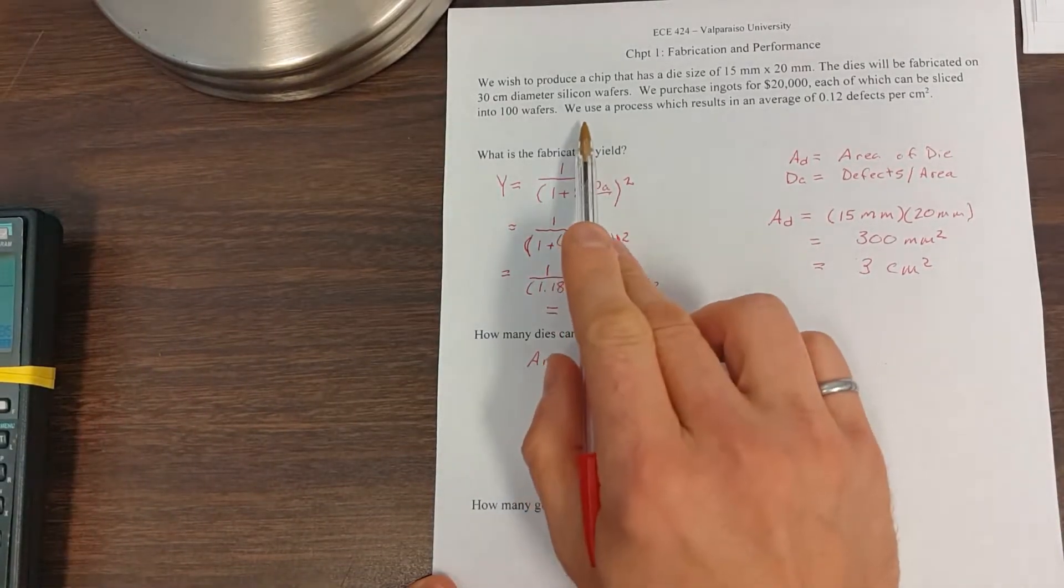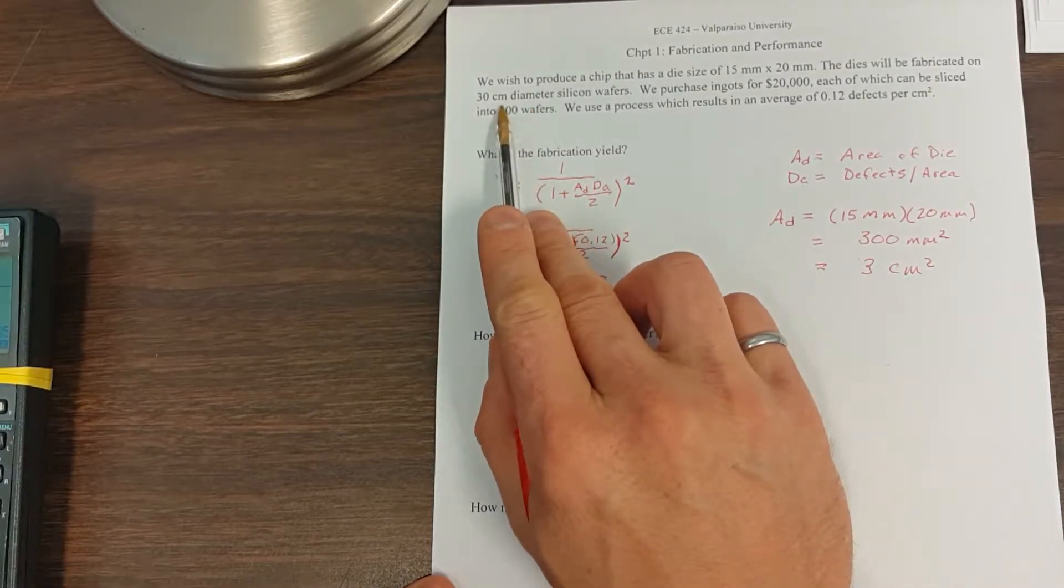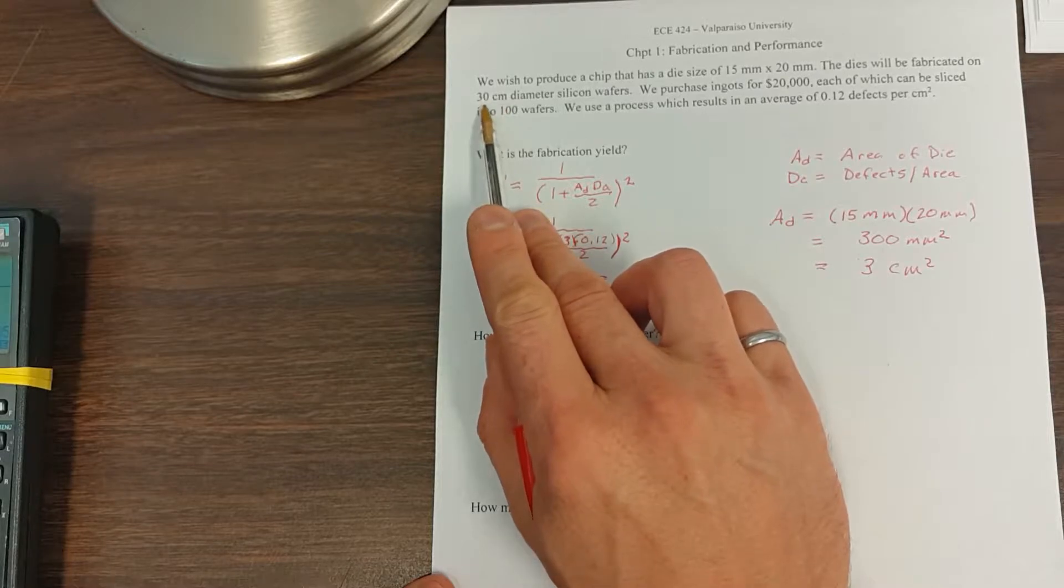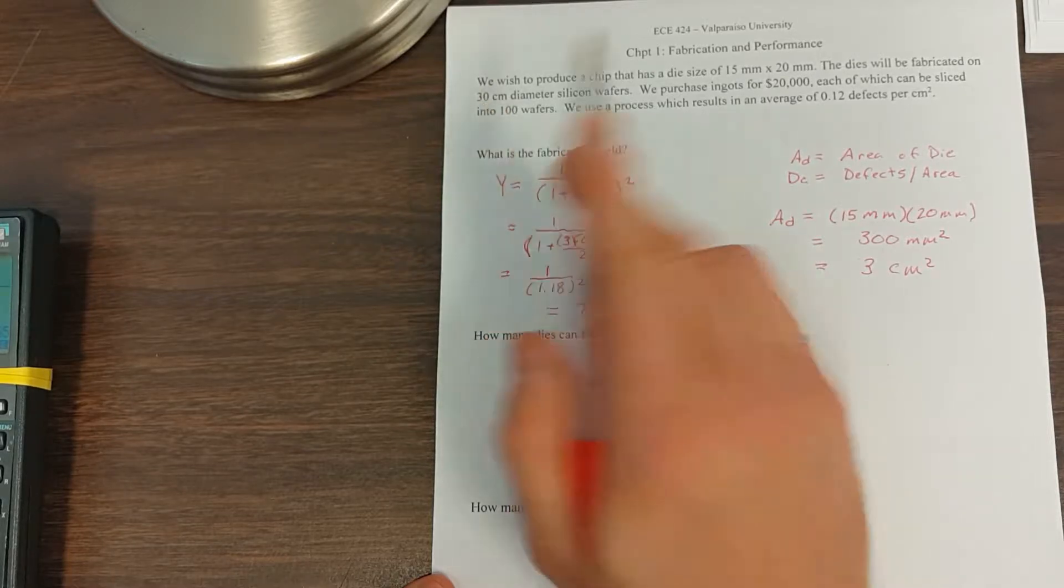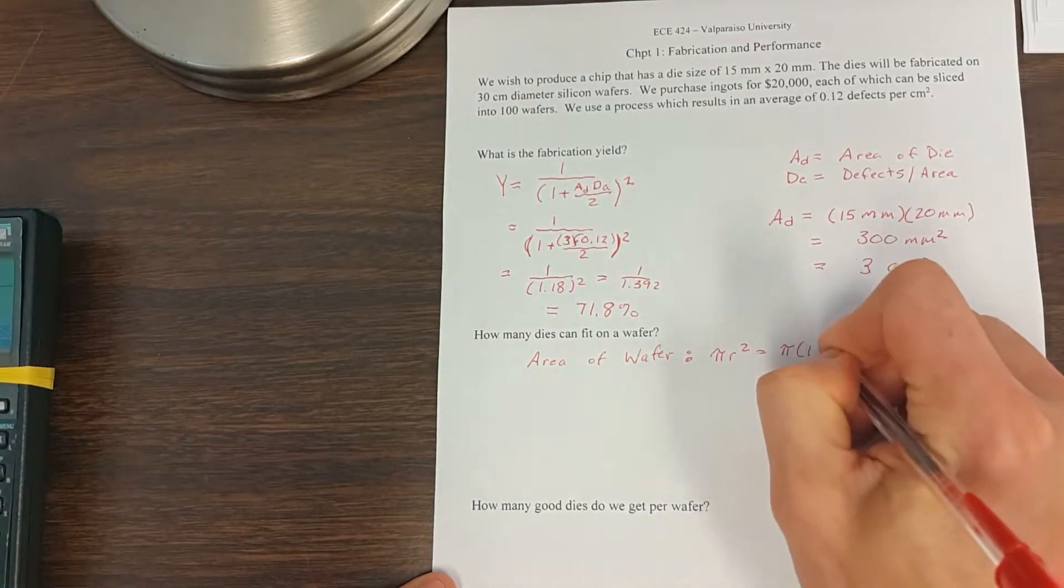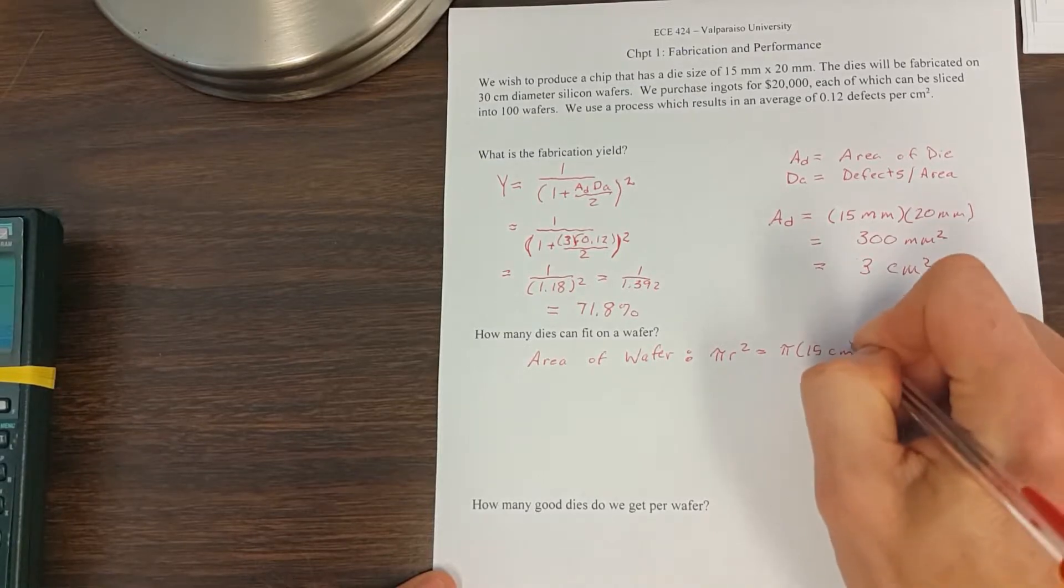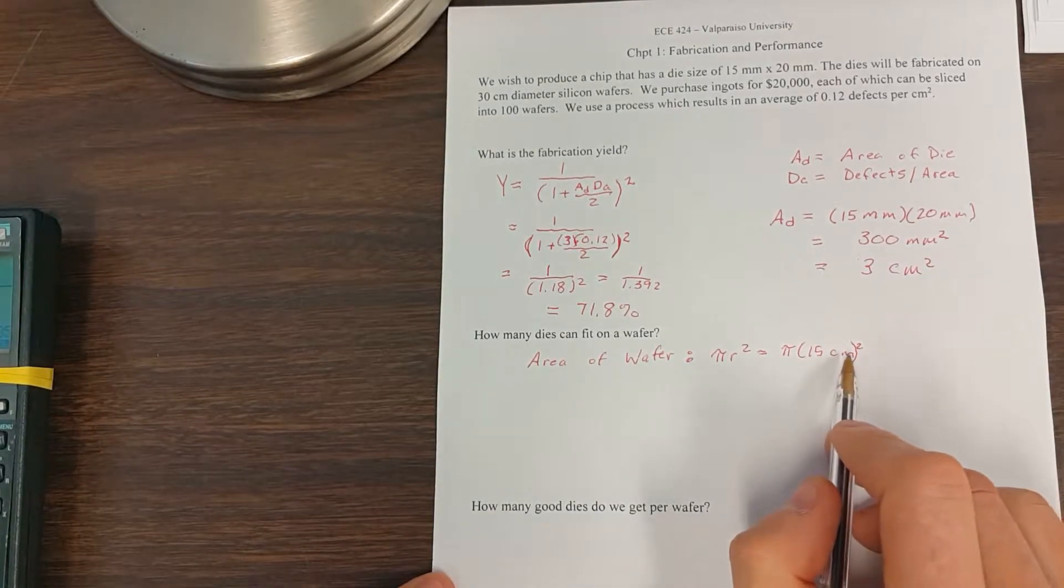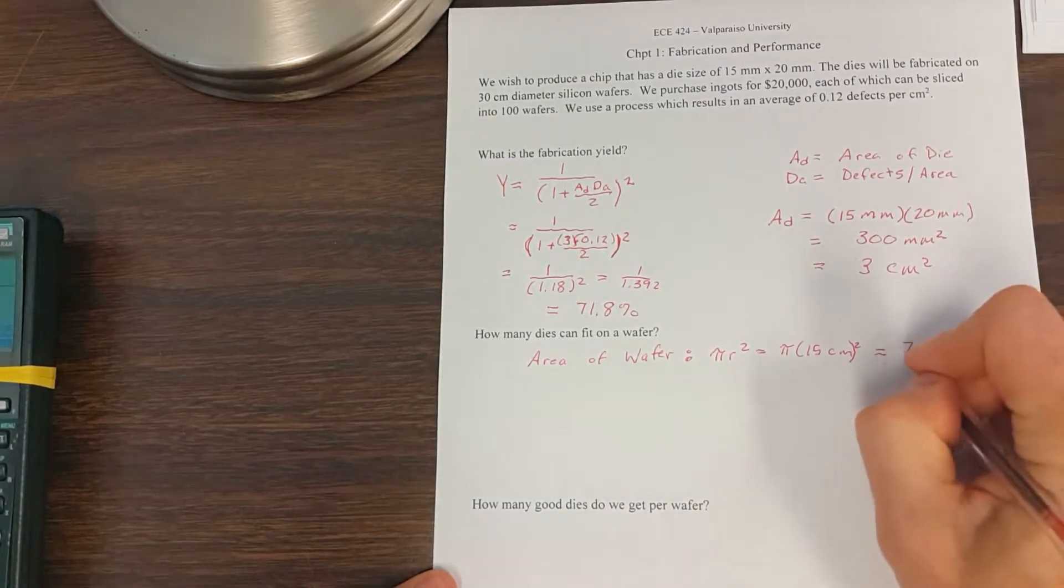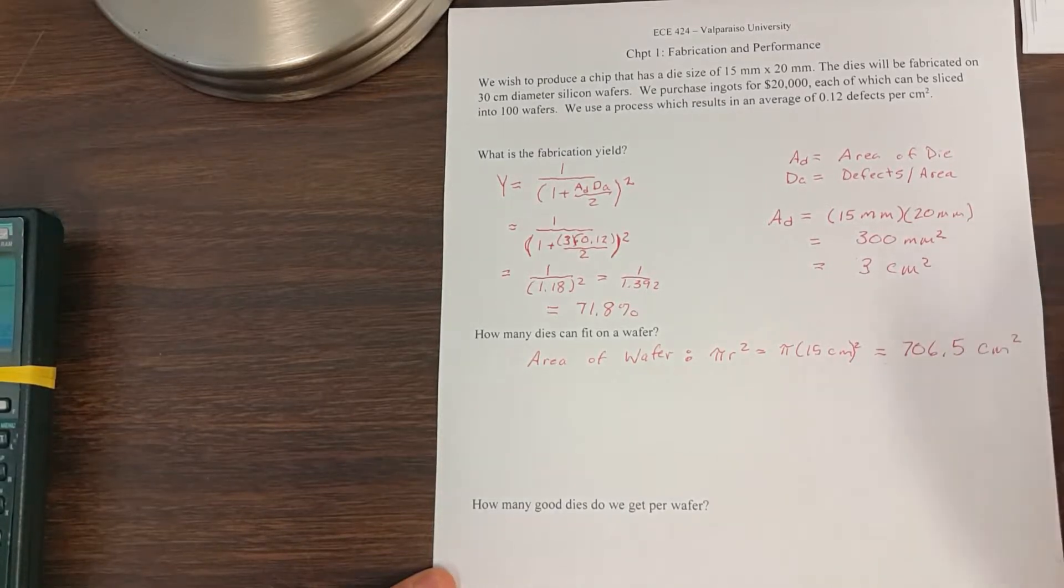Now in the problem, we're told that they are 30 centimeter diameter. Take note of that too. Most of the time you'll be given the wafer in diameter. So that means it has a 15 centimeter radius. So with that, we're going to take pi times 15 centimeters, 15 centimeters quantity squared, so that we'll get centimeters squared. That results then in 706.5 centimeters squared.